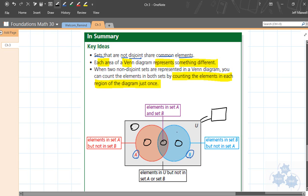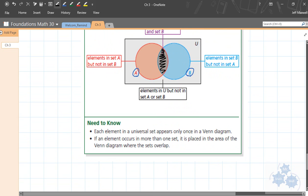Now, if we look at this diagram here, the blue part, elements in set B but not in set A, and that is this part right here. Elements here in U but not in set A or B. So that's all the outside part here. And on the other side here, elements that are in set A but not B, so that's just this region here, not including the overlap. And then this region in the middle would be everything that's in both sets. This is where the two circles intersect, where they overlap. Each element in a universal set appears only once in a Venn diagram. If an element occurs in more than one set, it's placed in the area of the Venn diagram where the sets overlap.